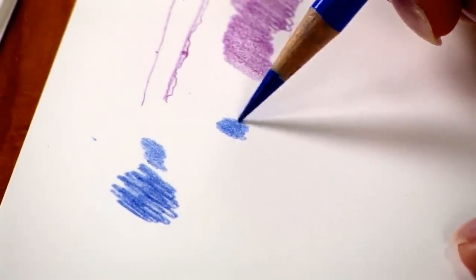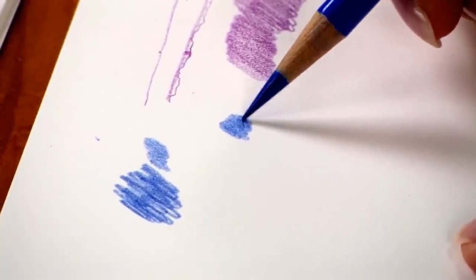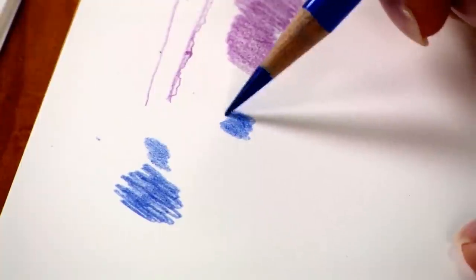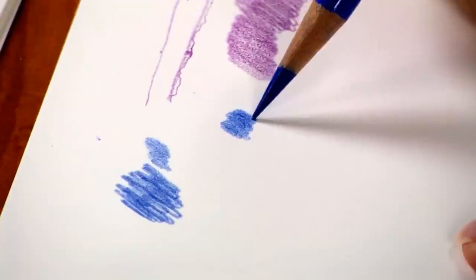Now I'm ready to rotate the pencil again. It just gives me a little edge that I can use to help deposit the color down in the tooth where I want it. As soon as I rotate it, it becomes very sharp on that edge, so I have to lighten up a little bit on the pressure.